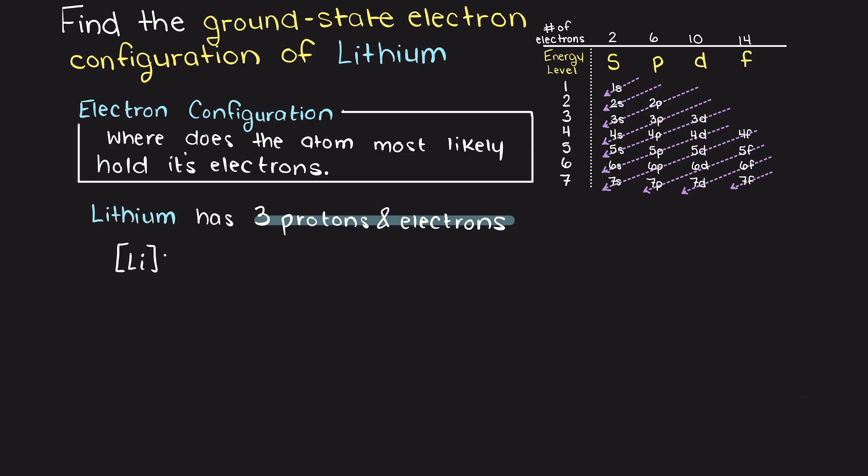So, since we have 3 electrons to place, let's have a little counter here at the top and whenever we place some of the electrons we can move them into the right spot. We always begin with 1s and as we discussed before, s subshells can hold 2 electrons.